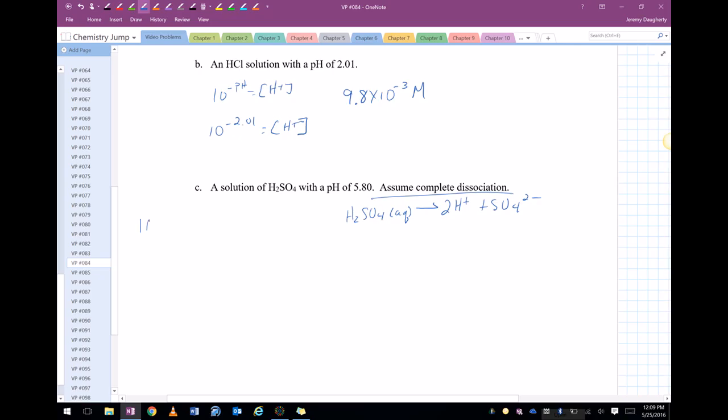So if the pH is 5.8, that means the concentration of the hydrogen ion is 10 to the negative 5.80. Which gives me a value of 1.58 times 10 to the negative 6th is equal to my concentration of the hydrogen ion.